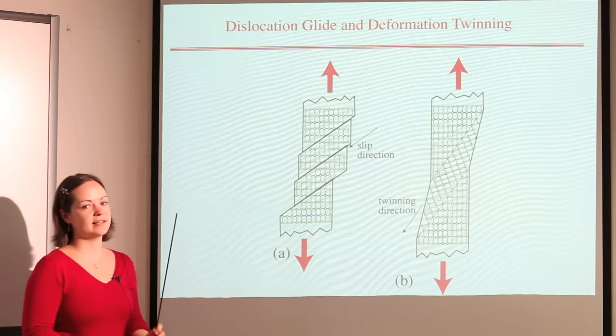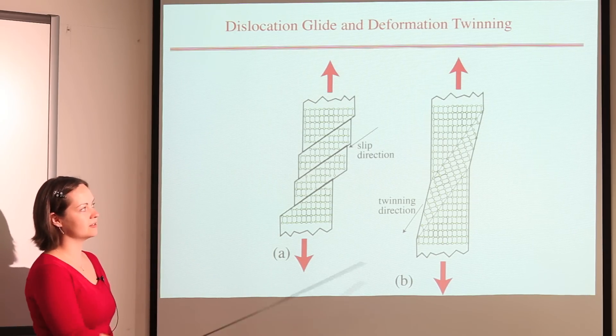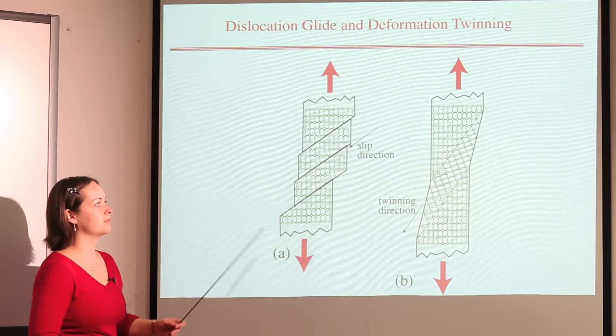This slide shows schematically the difference between dislocation motion and deformation twinning. It's worth pointing out that this is just for a single crystal, but of course both occur in polycrystals as well.